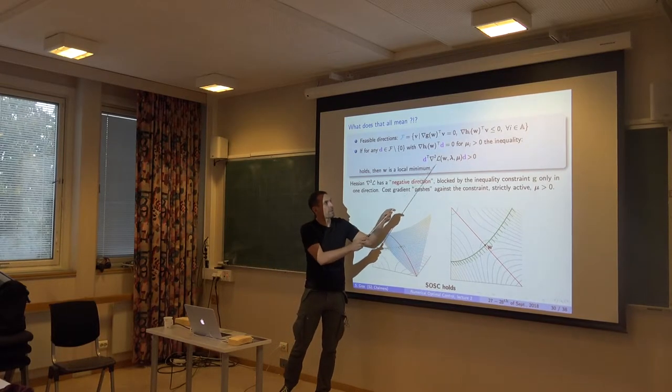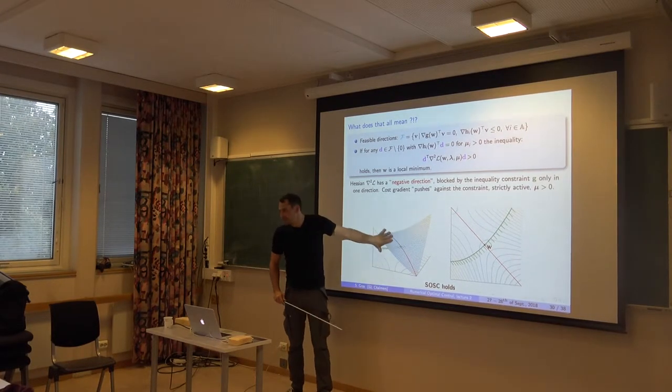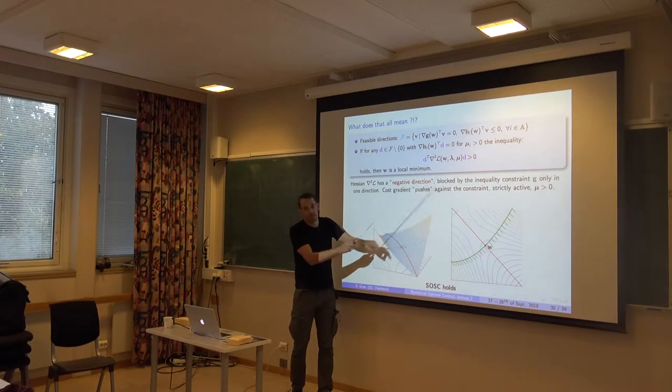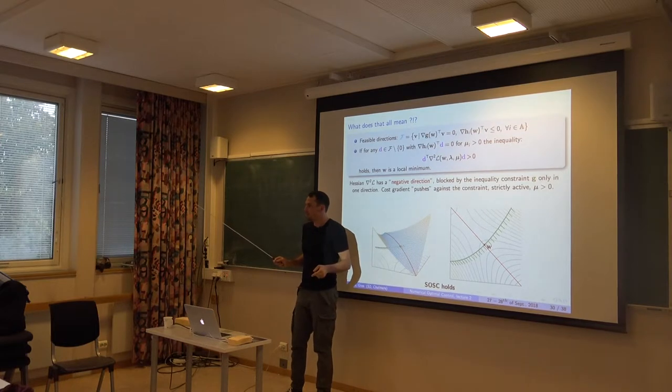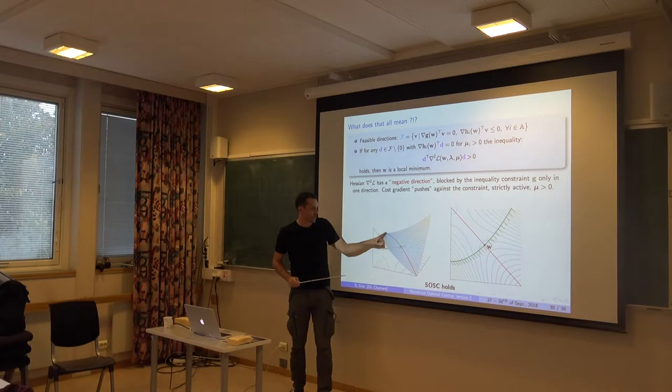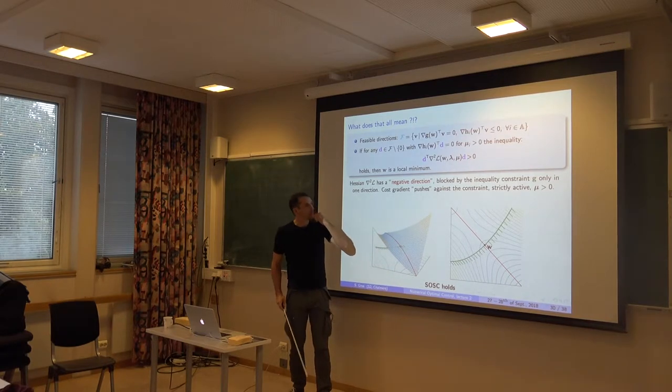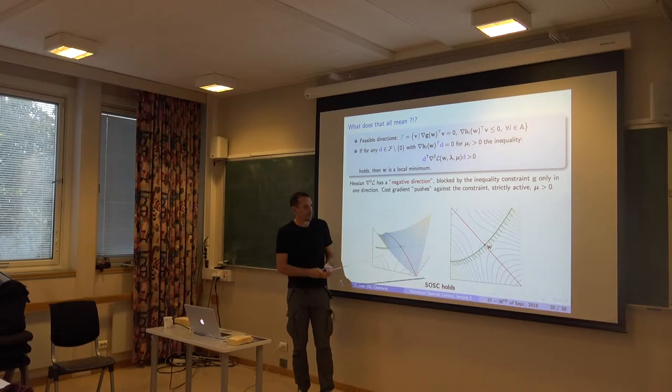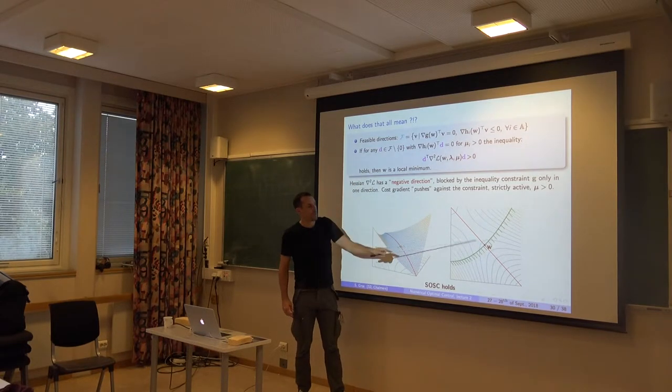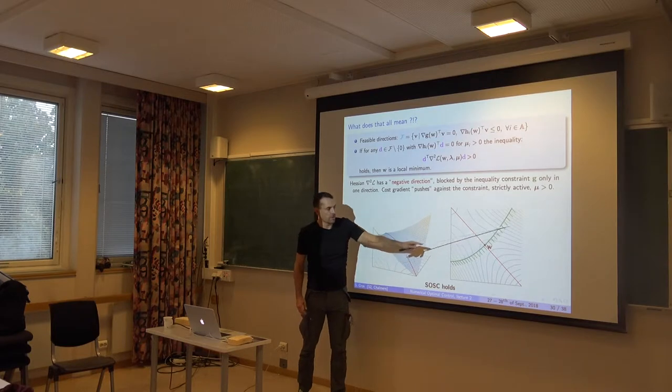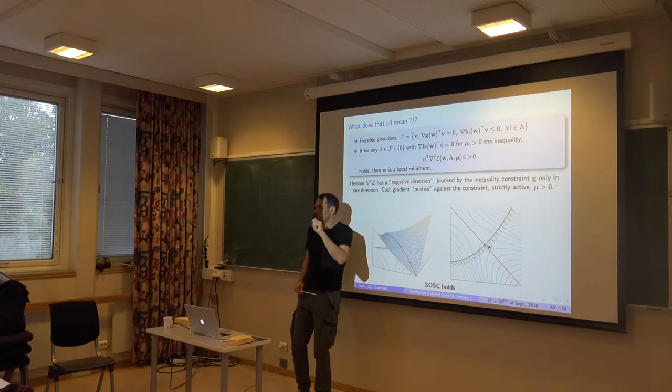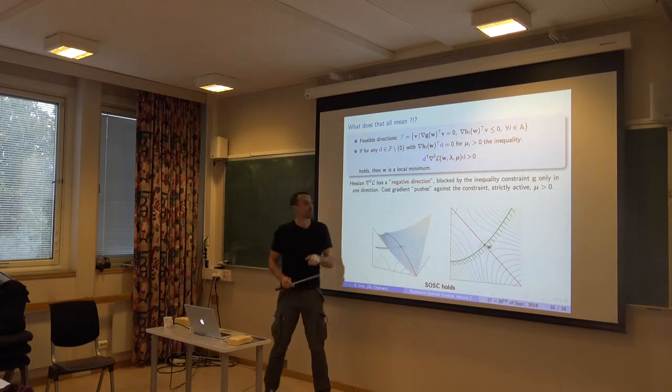So this matrix itself, if that function is the Hessian of the Lagrange function itself, that function indeed has a negative direction, or that matrix has a negative direction in that direction here. What saves the day is that the constraint and the way this whole thing is built makes us look only in that direction here. In case of doubt, you need to write down properly the whole thing.